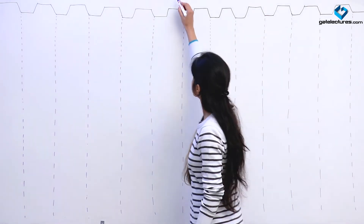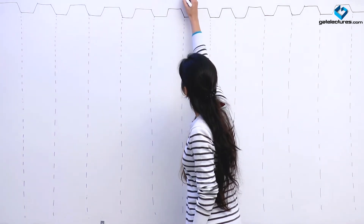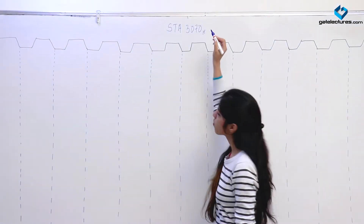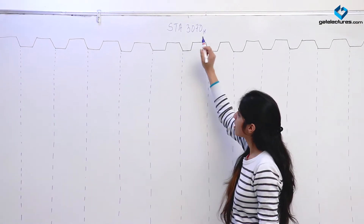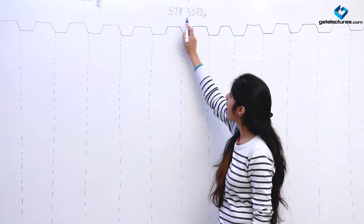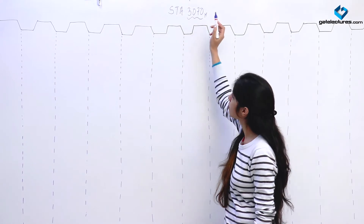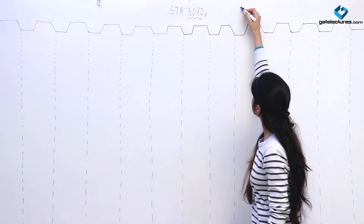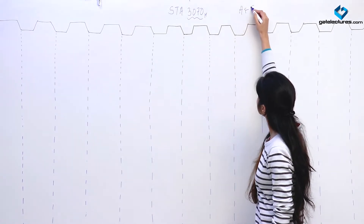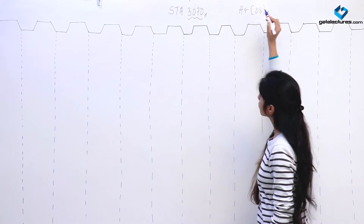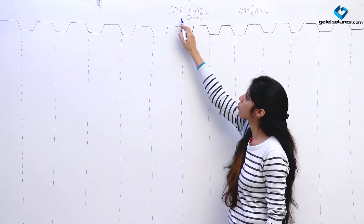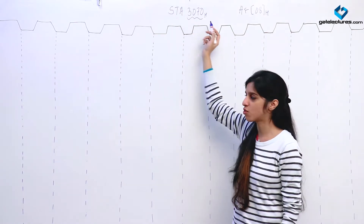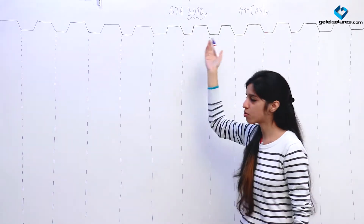Let us look at the timing diagram of the instruction known as STA. Suppose we are given an instruction STA 3070. What this instruction does is it is going to store the contents of the accumulator at memory location 3070. Suppose the contents of the accumulator are 08H. After execution of this instruction, 08H is going to be stored at memory location 3070. Now let us look at the timing diagram.